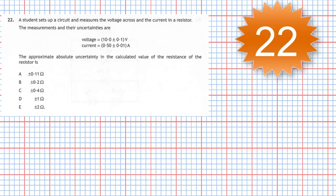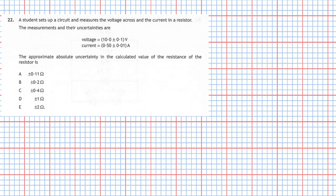Question 22 from section 1 of the 2019 Higher Physics examination. A student sets up a circuit and measures the voltage across and the current in a resistor. The measurements and their uncertainties are given below: voltage equals 10.0 plus or minus 0.1 volts.